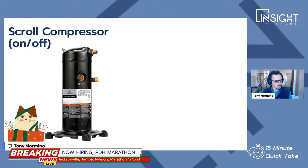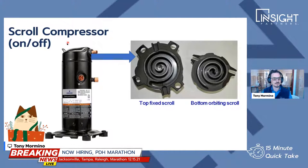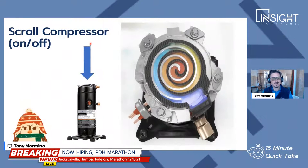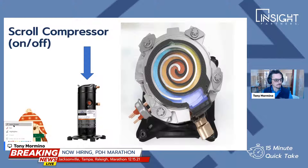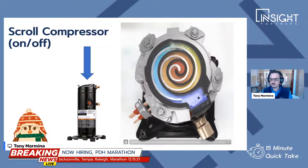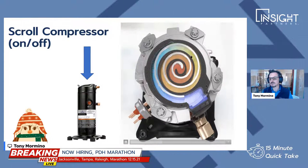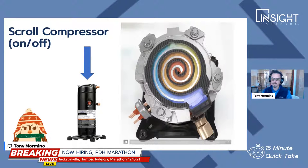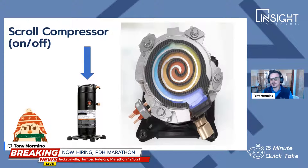What's going on inside this thing? If you were to take this cap off and look inside, you would see a top fixed scroll and a bottom orbiting scroll. These two mesh together and sit on top of each other to compress the gas. If you look down into the top of the compressor, you would see this animation. You can see the gas coming into this chamber, represented by a purplish color.